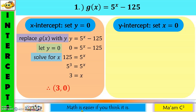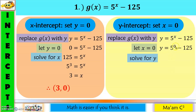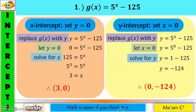For the y-intercept: replace g of x with y, then let x equal zero. So y equals five raised to zero minus 125. Five raised to zero is one, so y equals one minus 125, which equals negative 124. My x is zero and my y is negative 124. Therefore, the y-intercept is (0, −124).